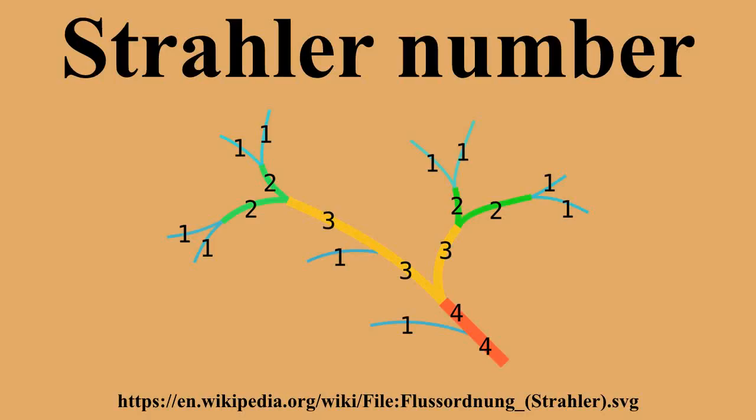Another equivalent definition of the Strahler number of a tree is that it is the height of the largest complete binary tree that can be homeomorphically embedded into the given tree. The Strahler number of a node in a tree is similarly the height of the largest complete binary tree that can be embedded below that node.